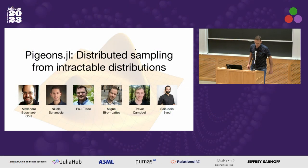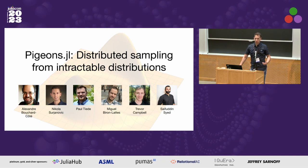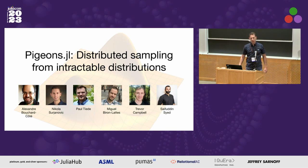Hello everyone, and first of all I'd like to thank the organizers for having such a great conference. In this talk I'll present Pigeons, which is a new package that we are developing for distributed sampling from complex distributions. It enables users to leverage distributed computation using up to thousands of MPI communicating machines. I'll also describe some lessons learned on achieving what we call strong parallelism invariance, which might be of interest to the general Julia developer.